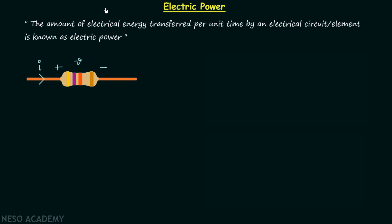In the last lecture we had discussion on electric potential difference or voltage. In this lecture we will understand what is electric power and how to determine the sign of electric power — whether it is getting absorbed or it is getting delivered. We will begin our discussion with the definition of electric power.